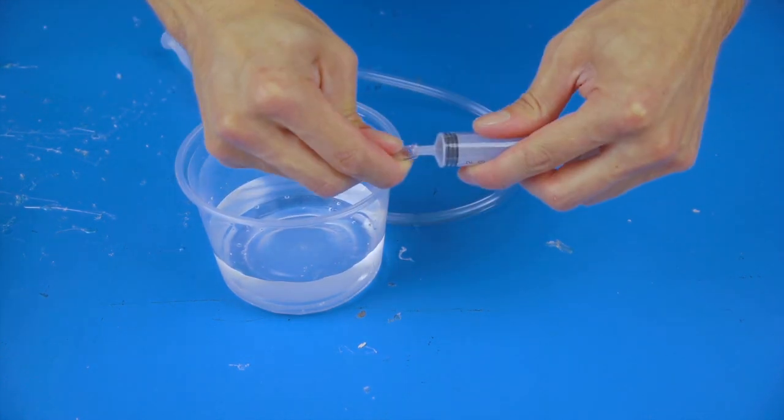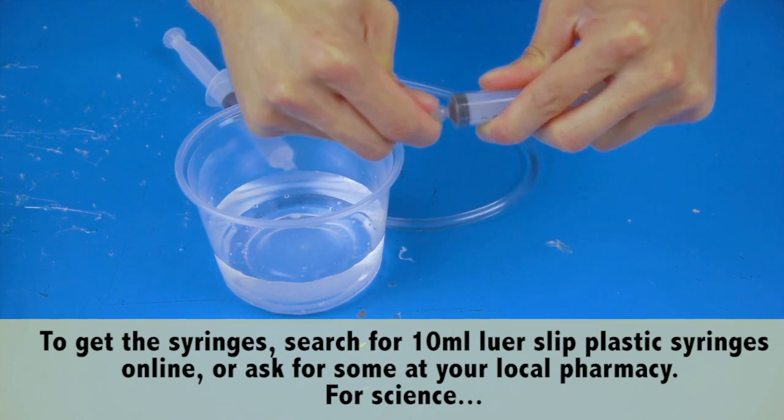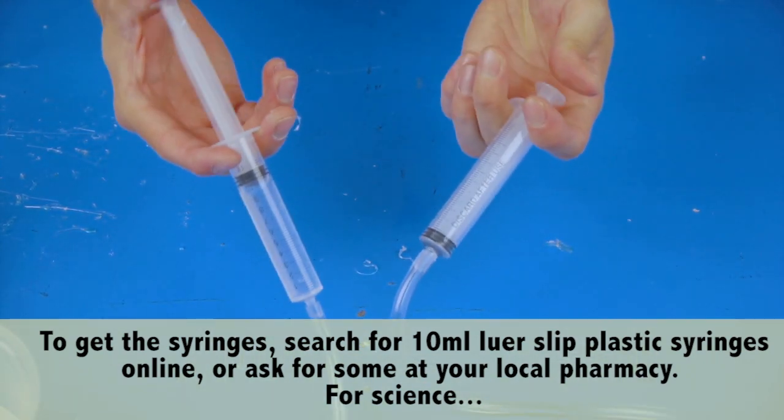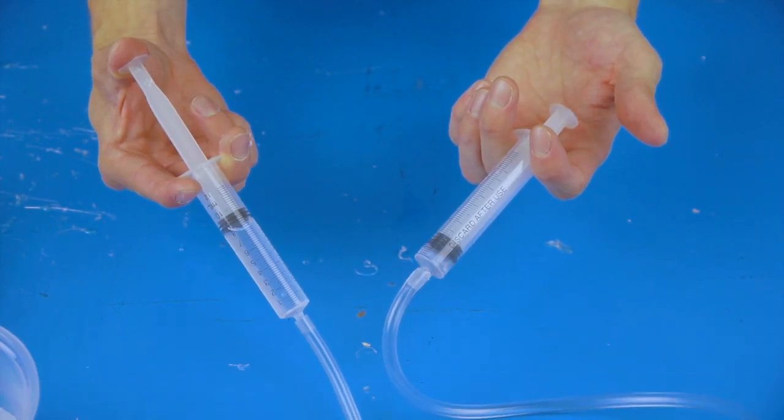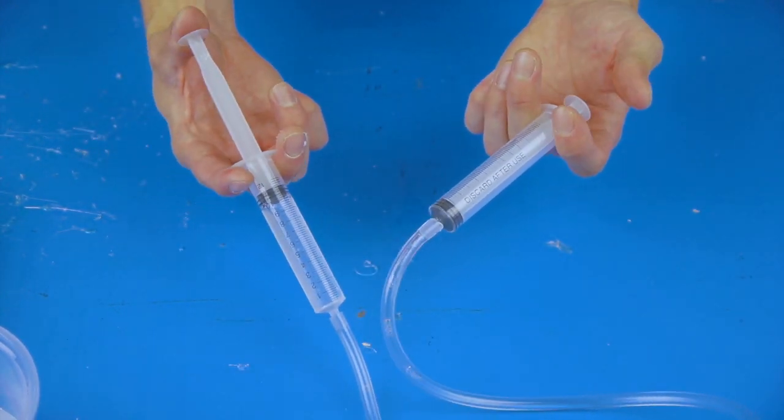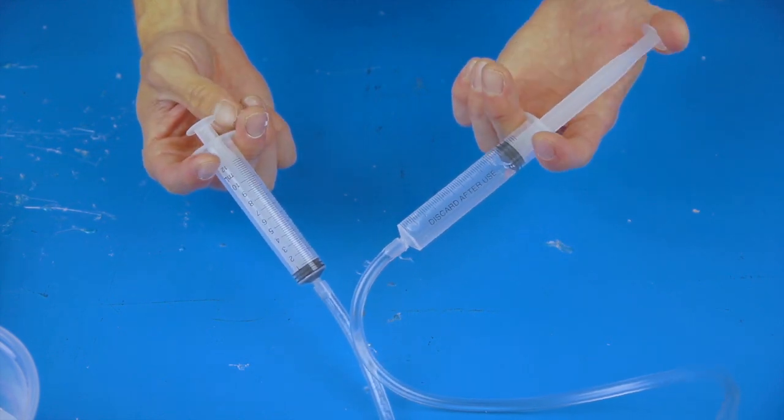Fill it back up to 10 milliliters, attach the other syringe, and try it out. It's important that the hydraulic system has little to no air in it. If you have air in the system, your pushes and pulls on the control will expand and contract the air instead of pushing and pulling on the water.